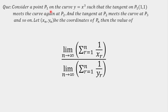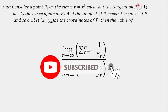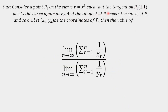Today's question is: consider a point P1 on the curve Y = X³, such that the tangent at P1 meets the curve again at P2. Then we draw a tangent at P2, which meets the curve again at P3. This sequence continues — the tangent at P3 meets the curve at P4, and so on. Let X(n) and Y(n) be the coordinates of P(n). We have to find the value of the limit as N approaches infinity of the summation of (1/X(R)) divided by the summation of (1/Y(R)), where R varies from 1 to N.